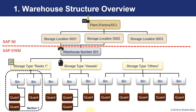We can have different sections in the same storage type, and each section is going to group together different bins with the quants. And this is something new in EWM — we also can have what are called activity areas. These activity areas can group different bins, and this is a big difference, even bins of different storage types. So this would be the whole structure we can have, and depending on the business, it can be more complex or not.